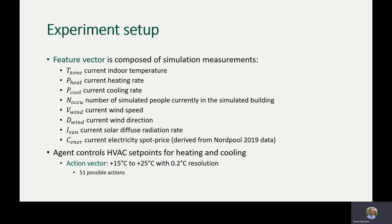The feature vector is composed of various simulation measurements: current indoor temperature, current heating rate, current cooling rate, the number of simulated people currently in the building (important for calculating work performance loss), current wind speed, current wind direction, solar diffuse radiation rate, and Nord Pool 2019 electricity spot price data. This electricity spot price is also used when calculating the electricity cost for any given time step.